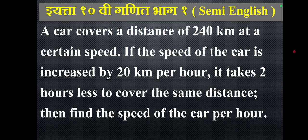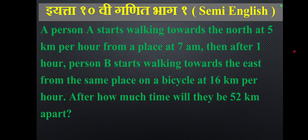A person starts walking towards the north at 5 km per hour from a place at 7 am. Then after 1 hour, another person starts walking towards the east from the same place on a bicycle at 16 km per hour. After how much time will they be 50 km apart?